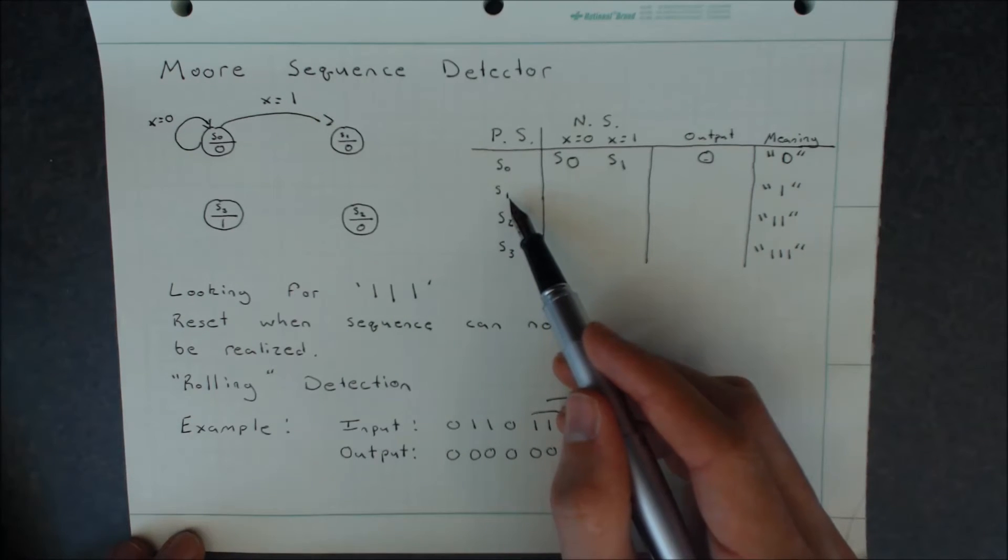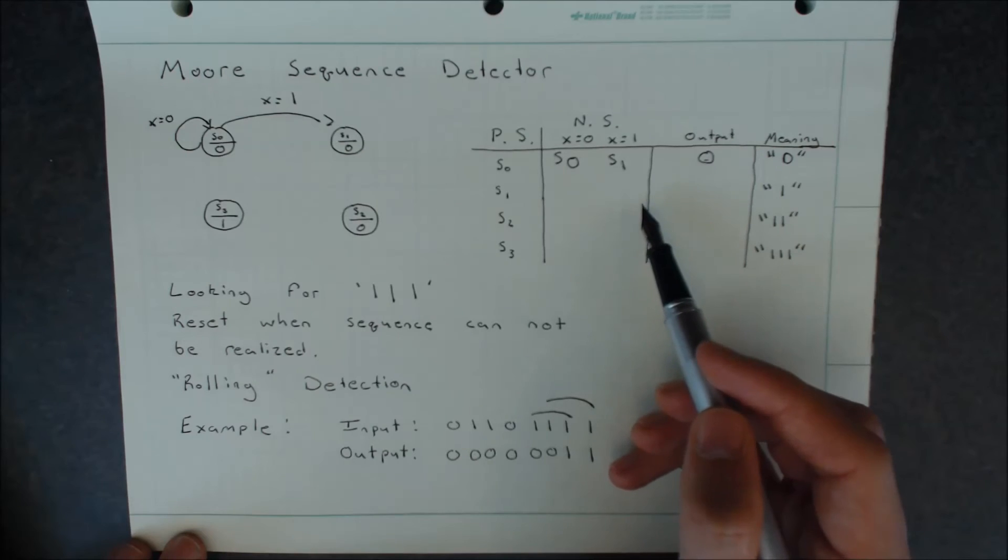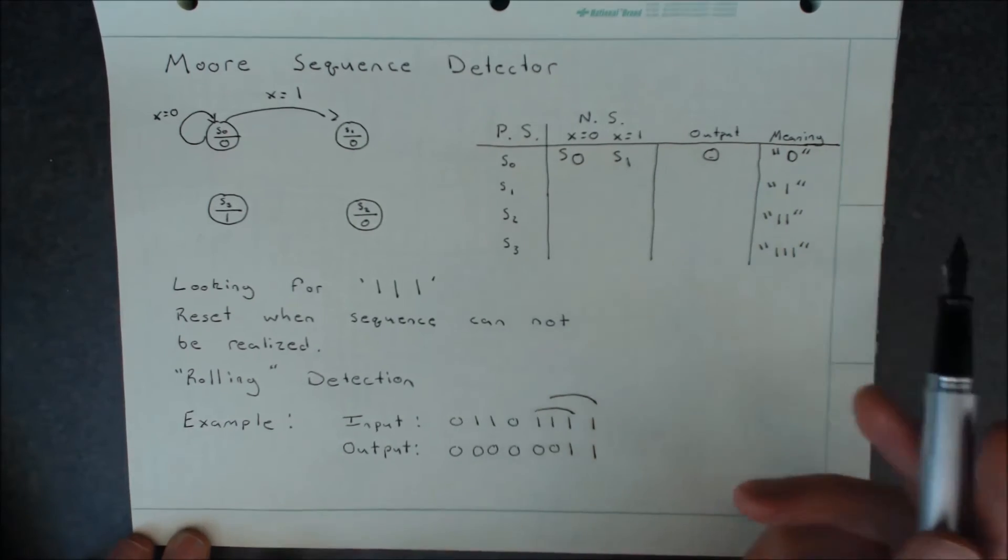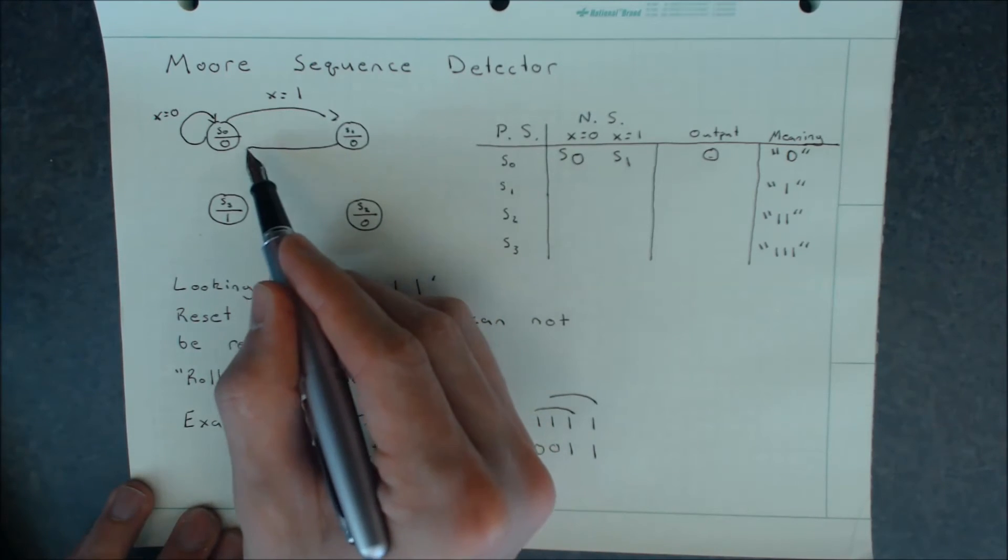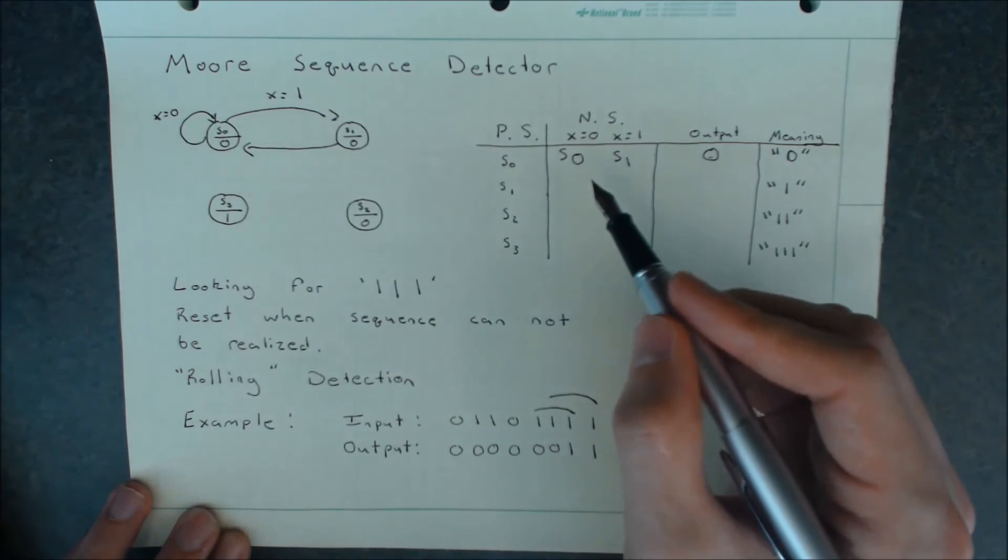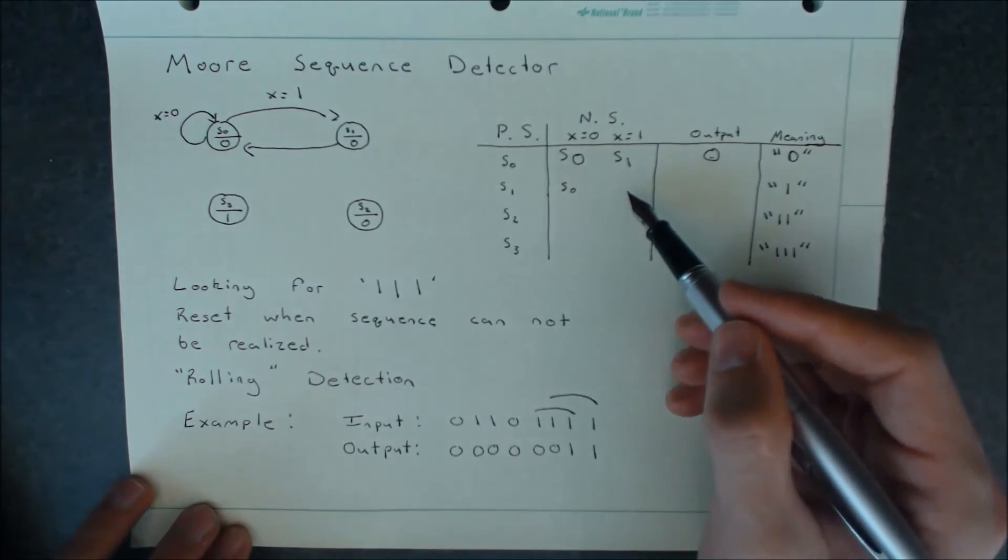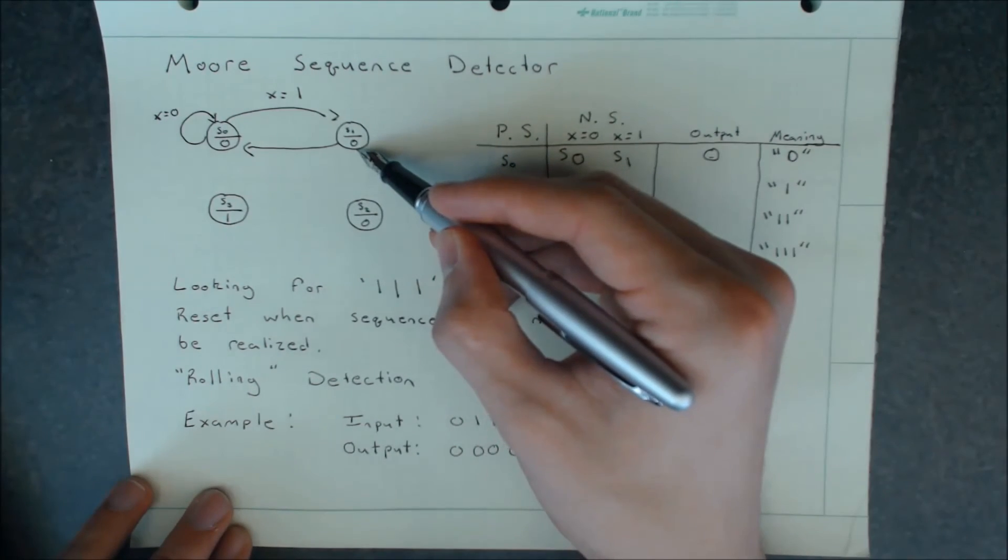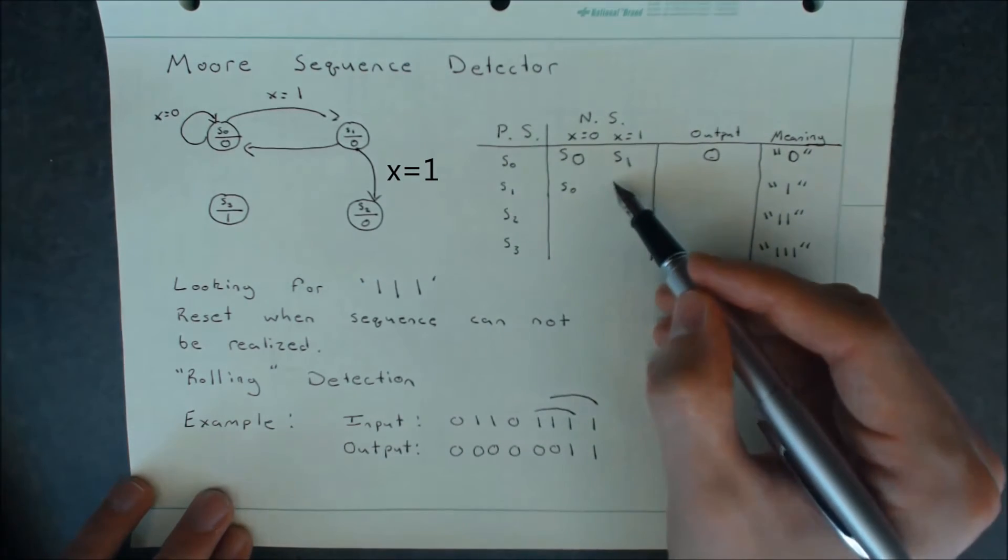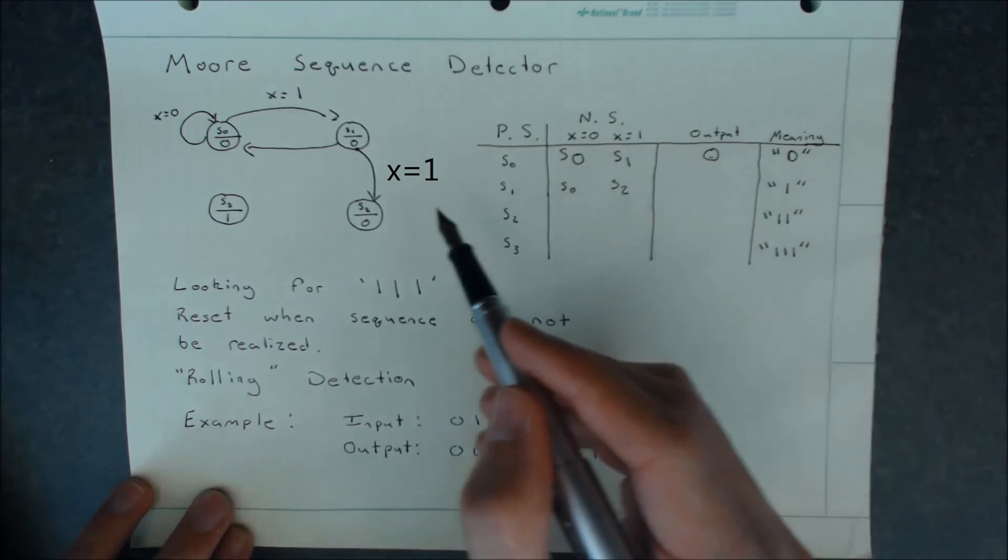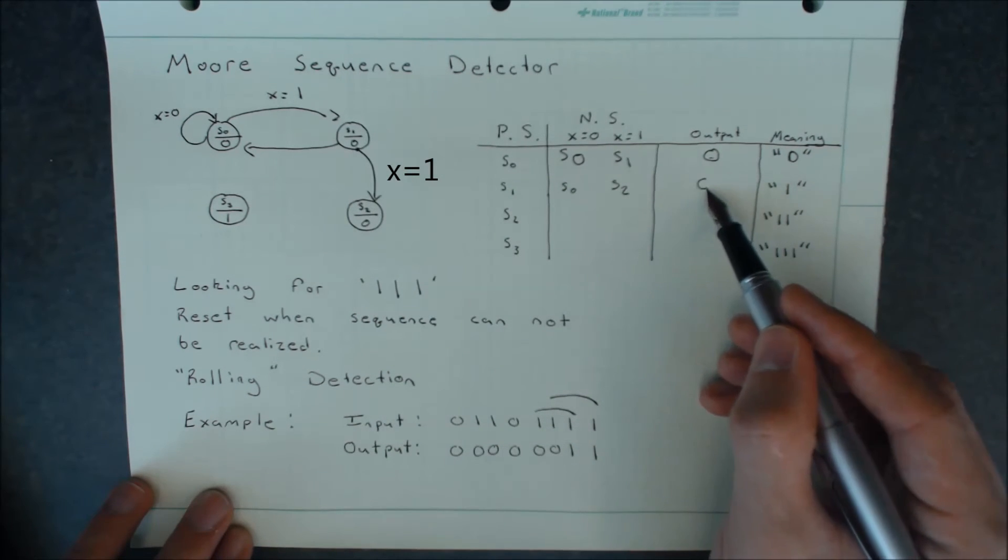If we're in S1 now, we have to define what happens for an input of a 0 and an input of 1. For an input of 0, we can no longer realize our target, so we will move back to S0. However, if we receive another 1, we'll be traveling forward to S2. And if we look in S1, we see that S1 has a defined output of 0 still.